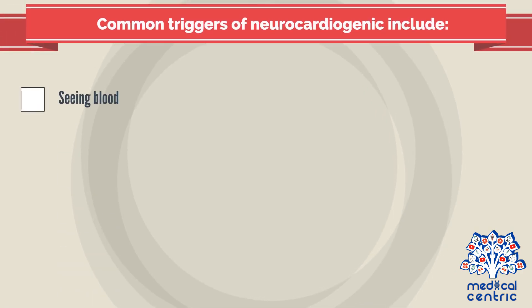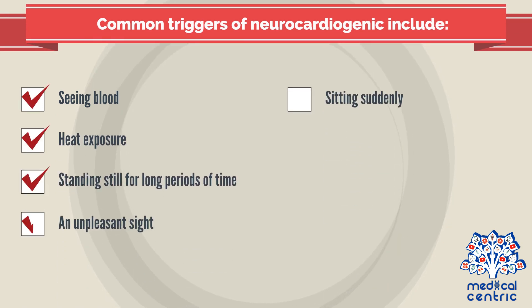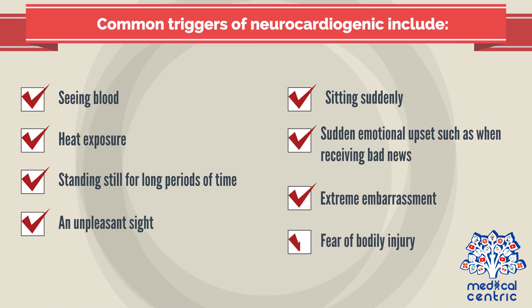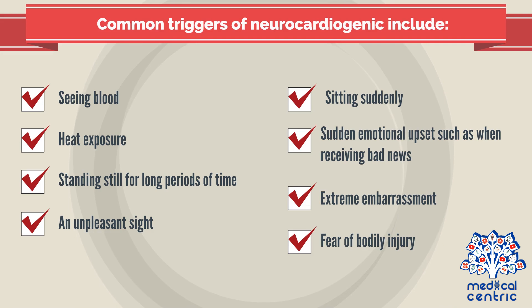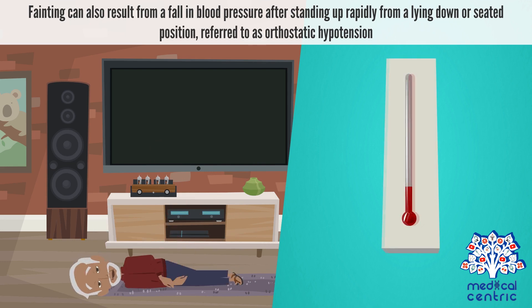Common triggers of neurocardiogenic syncope include various stimuli. Fainting can also result from a fall in blood pressure after standing up rapidly from a lying down or seated position, referred to as orthostatic hypotension.